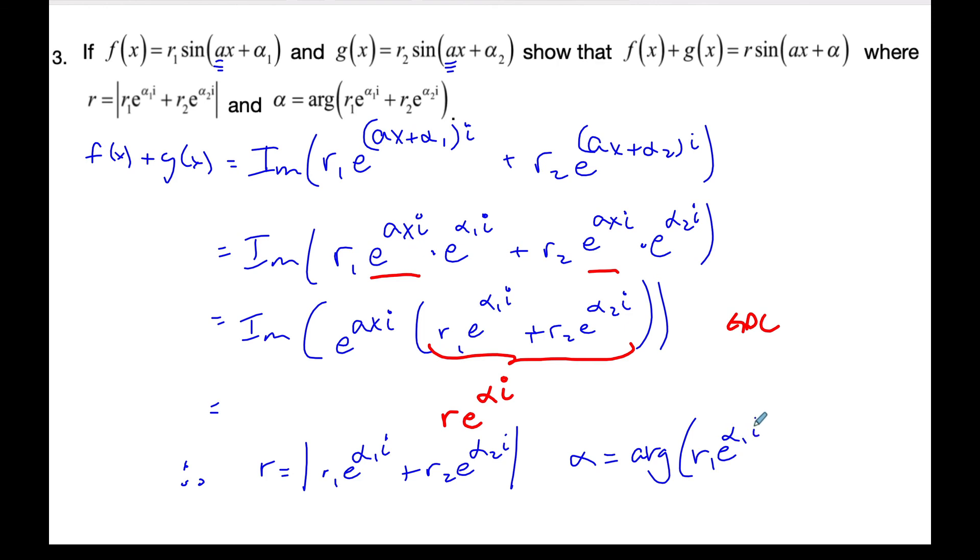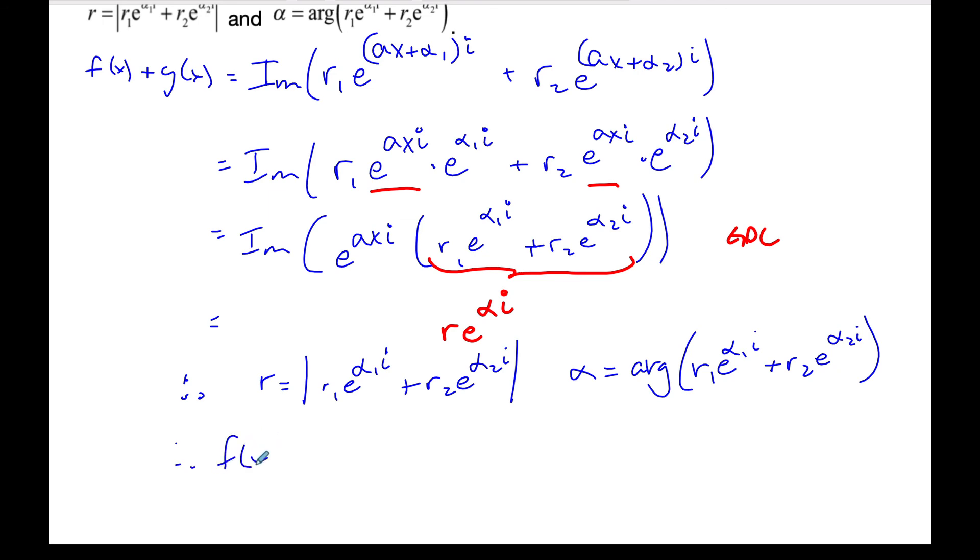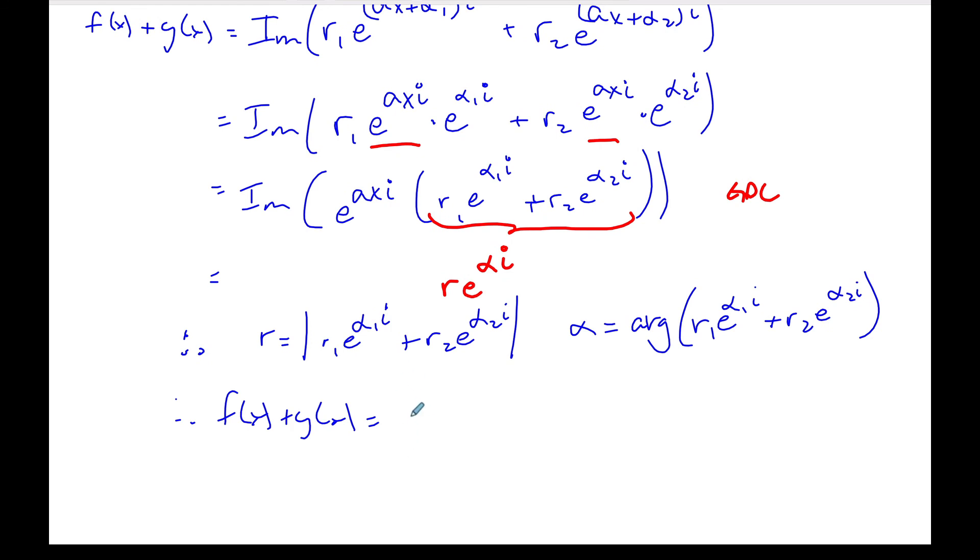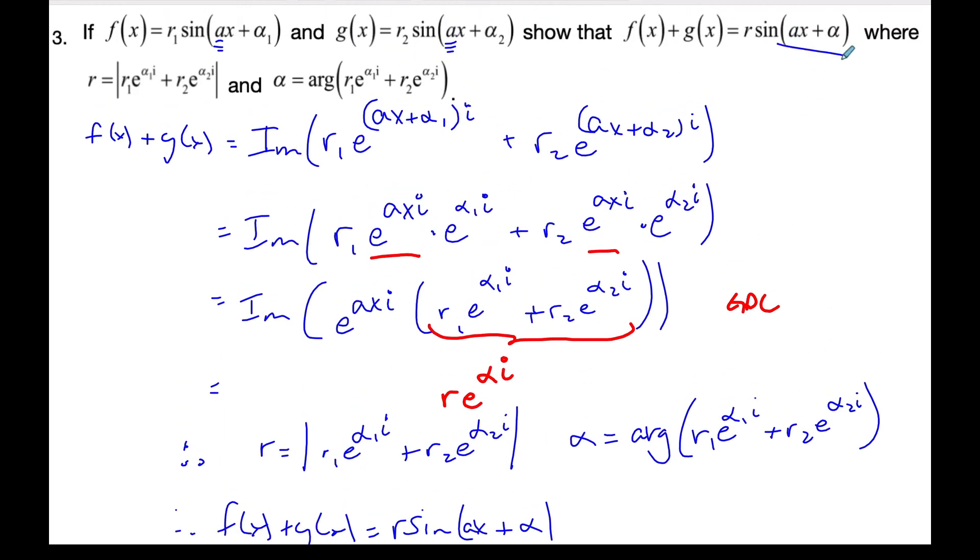Whatever the angle is will be what we get when we put this together. And so that's how I can show that. So therefore F of X plus G of X is equal to R sine AX plus this is the alpha that I'll get, this is the R I'll get, which is what I wanted to show.